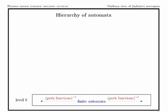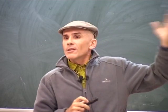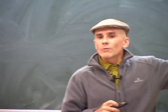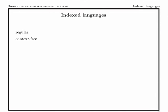We use these operations to consider a hierarchy of this simple model of automata — viewed just as a relational structure — where at the basic level zero we have finite structures, and we climb up in the hierarchy using full iteration, with each level being closed by these inverse path functions, which correspond to a restricted monadic singular interpretation. This hierarchy is infinite, it is strict, and it may be defined in other ways: using unfolding instead of iteration, and other similar operations.